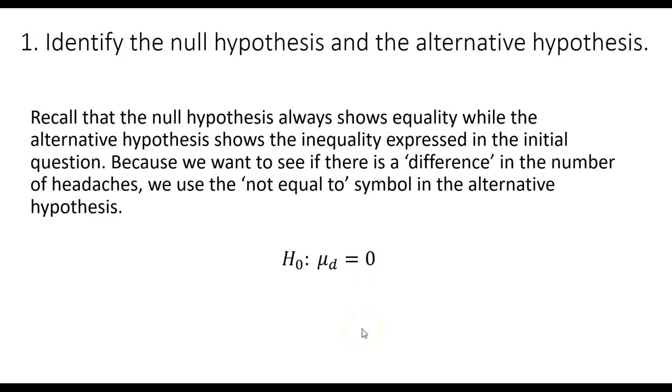Therefore, our null hypothesis is going to be the mean of the differences equals zero, because if there is no difference, the difference will be zero. And our alternative hypothesis will be mu sub d is not equal to zero, because it's a difference in the number. So because we have not equal to, this will be a two-tailed hypothesis test.